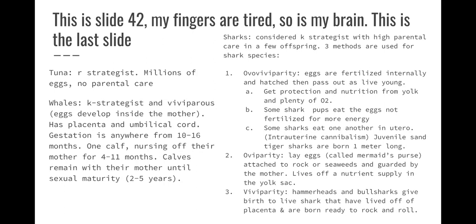Sharks are considered K strategists because they have high parental care and few offspring — not millions or thousands. Three reproductive methods are used for shark species. Ovoviviparity: eggs are fertilized internally, hatch inside the mother, and are passed out as live young — they get protection and nutrients from the yolk sac. Some shark pups can eat unfertilized eggs for more energy, and some sharks practice intrauterine cannibalism. Juvenile sand tiger sharks are born one meter long.